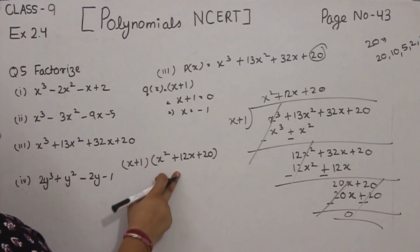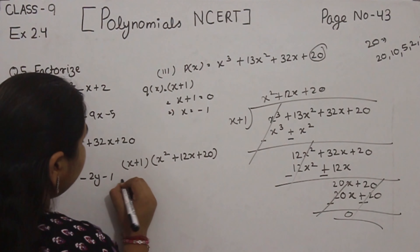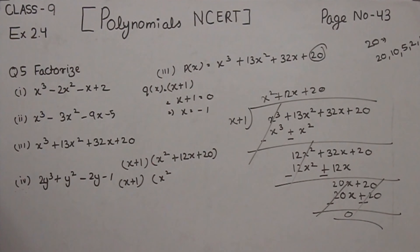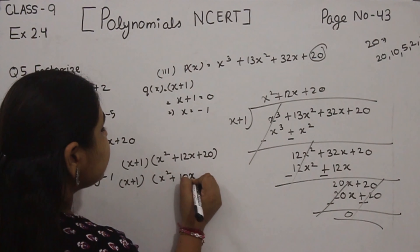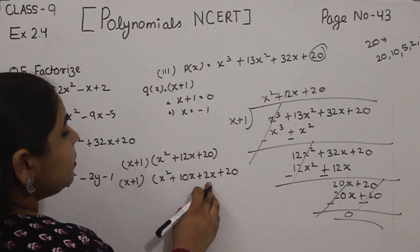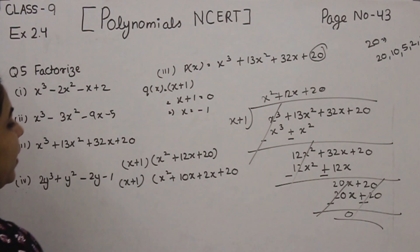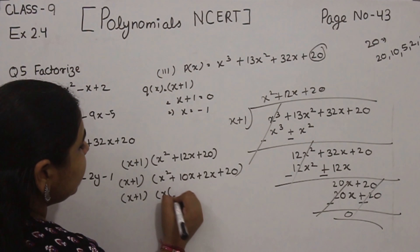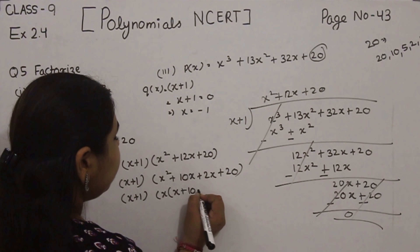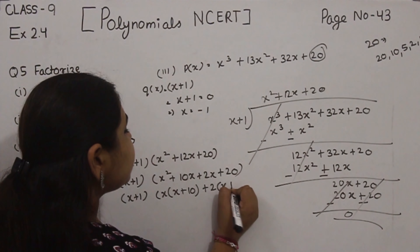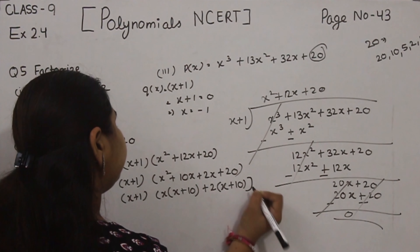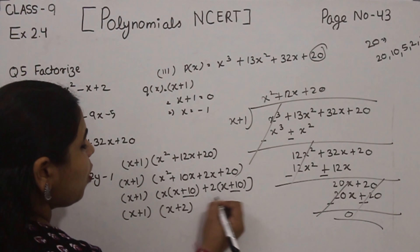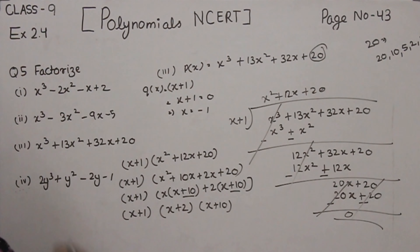This is a quadratic equation. We will split the middle term. So we write (x + 1), and split 12x as 10x + 2x + 20. Now 10 + 2 = 12 and 10 × 2 = 20. Taking x common: x(x + 10). Taking +2 common: +2(x + 10). So the factors are (x + 1)(x + 2)(x + 10).